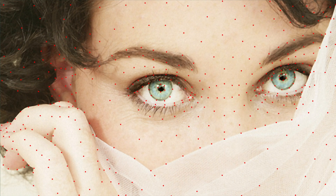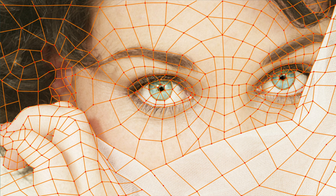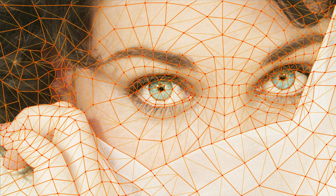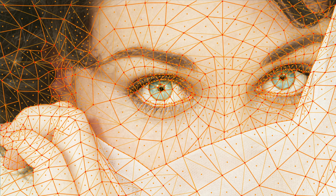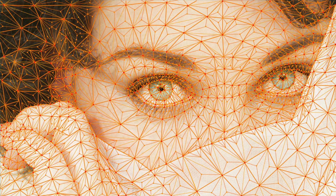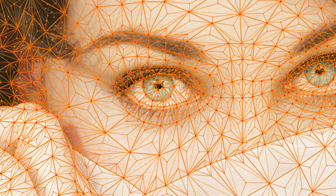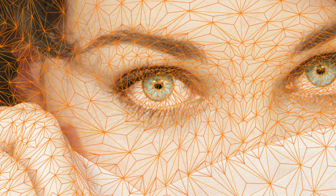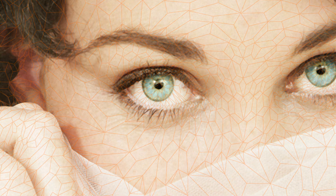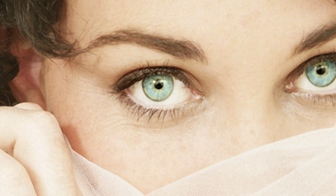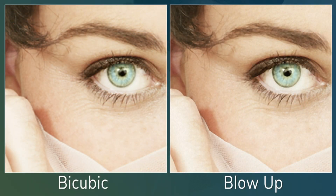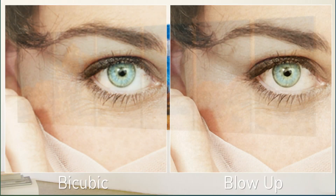Blow Up takes a different approach to resizing. It intelligently analyzes the pixels of the image and converts them into vectors that follow edges and contours. These vectors are then enlarged without sacrificing quality. When the vectors are converted back into pixels, you end up with a sharp image that is crisp and clean.